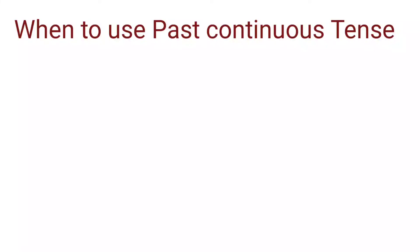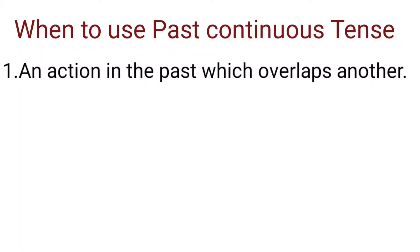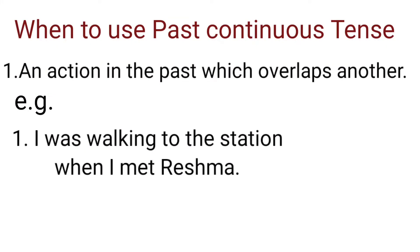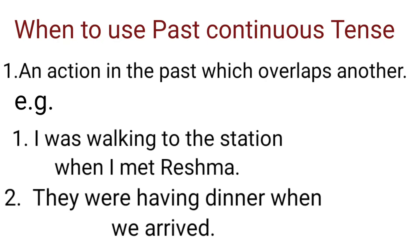Let's learn when to use the past continuous tense. First use: an action in the past which overlaps another action or a time. The action in the past continuous tense starts before and often continues after the other shorter action or time. For example: I was walking to the station when I met Reshma — I started walking before I met Reshma and maybe continued afterwards. Another example: They were having dinner when we arrived.